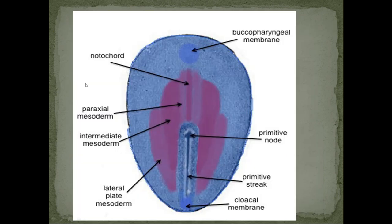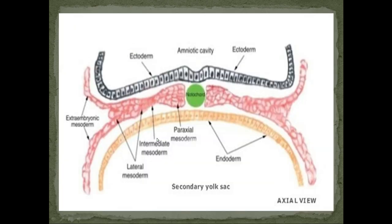Remember the primitive streak, primitive node, buccopharyngeal membrane, and cloacal membrane. The three types of intra-embryonic mesoderm near the notochord are: paraxial mesoderm adjacent to the notochord, then intermediate mesoderm, then lateral plate mesoderm. Above the notochord is the amniotic cavity, below is the secondary yolk sac, and outside is the extra-embryonic mesoderm. This mesoderm is paraxial, intermediate, and lateral.